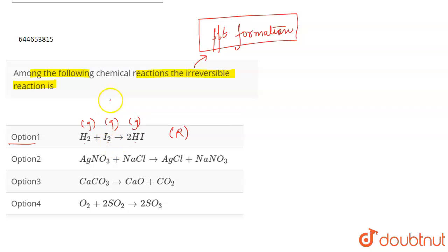are reacting to form AgCl and NaNO₃. Now this AgCl which is formed is a white-colored precipitate. As precipitate formation has taken place, it becomes very difficult to reverse such reactions.